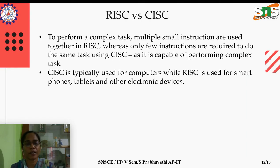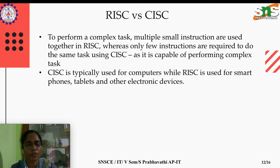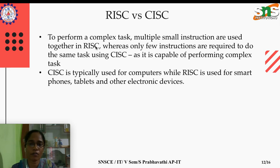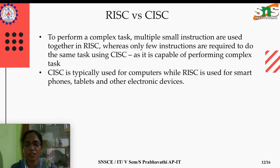Comparing CISC and RISC: to perform a complex task in RISC, multiple small instructions are used. In CISC, the instruction itself is complex and we can program using a reduced number of instructions — only a few instructions are enough for the same operations. CISC is used for computers, whereas RISC is used for smartphones, tablets, and other gadgets.